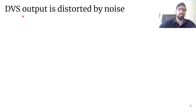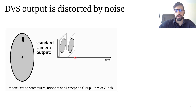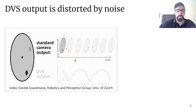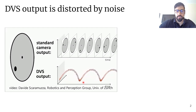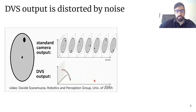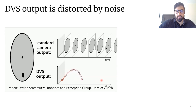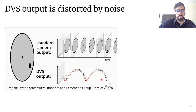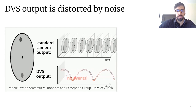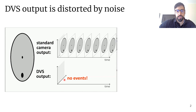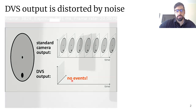First of all, let's go over an overview of what a DVS is and how its output is distorted by noise. Unlike a standard frame-based camera, which outputs frames periodically independently of what's going on in the scene, DVS is an event-based sensor which outputs a stream of events asynchronously in response to changes in relative light intensity in the scene. So only parts of the scene that change trigger events, and if the scene is static, ideally we expect no events at the DVS output.